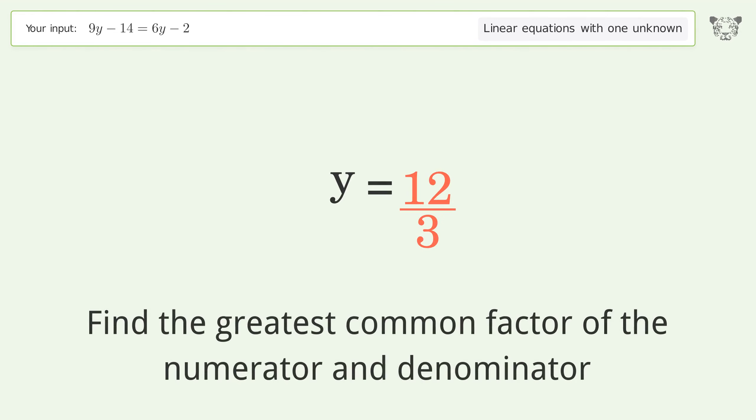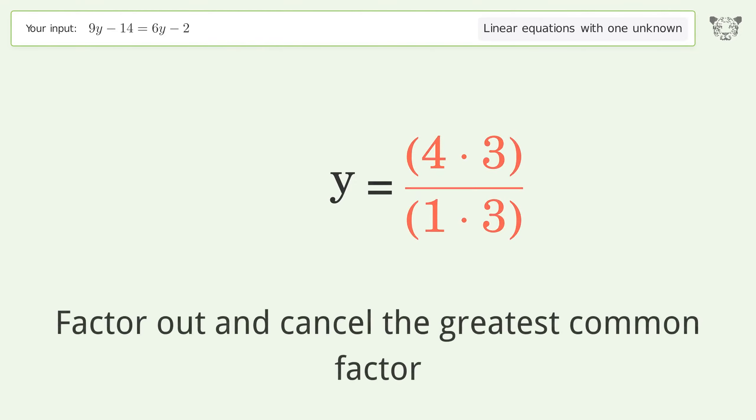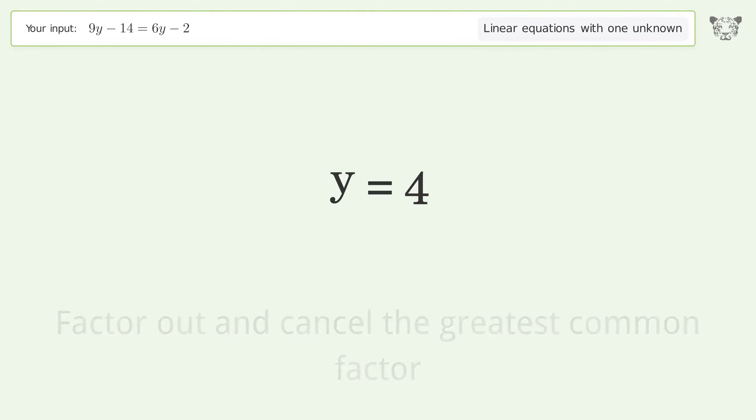Find the greatest common factor of the numerator and denominator. Factor out and cancel the greatest common factor. And so the final result is y equals 4.